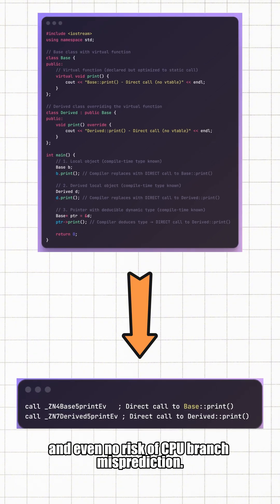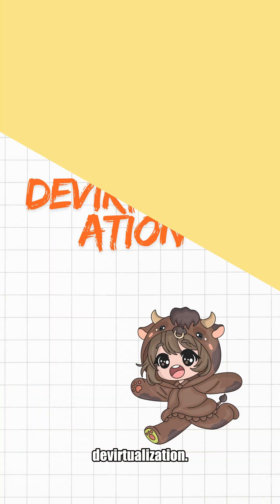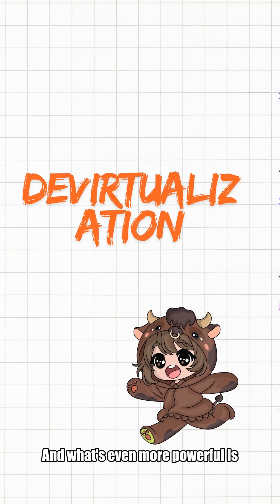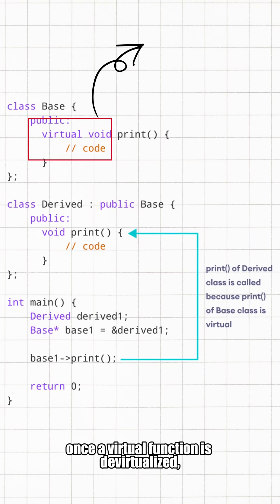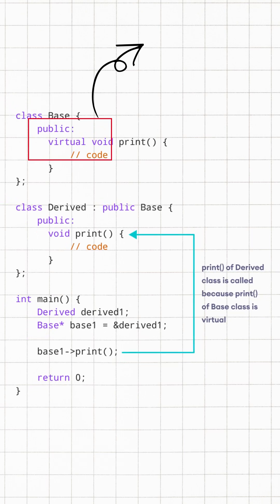This crucial optimization has a professional name: devirtualization. And what's even more powerful is once a virtual function is devirtualized, it's no longer a virtual function. The compiler can then perform various additional optimizations on it.